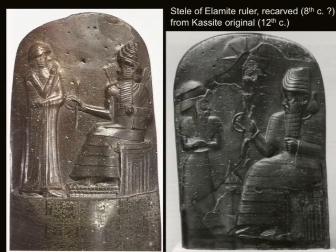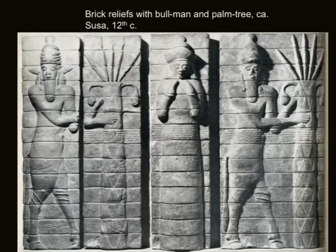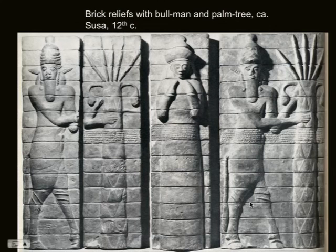We also see it in architecture too. These are some brick reliefs from Susa, and you can see the comparison here with what we saw at Babylon — at the Karanindash Temple. At the same time, Susa adopts these motifs and starts making brick facades for its temples using a very similar method. Different iconography — we see bullmen, an emphasis on palm trees and a central goddess — but the parallels are very clear.